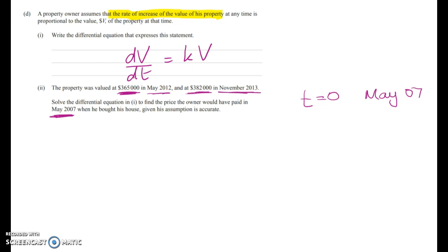So what's May 2012? Well May 2012 is five years later so it's going to be t equals 5 times 12, 60. So that's May 2012. Now November 2013 will be 18 months further on so it'll be t equals 78. So that's November 13.